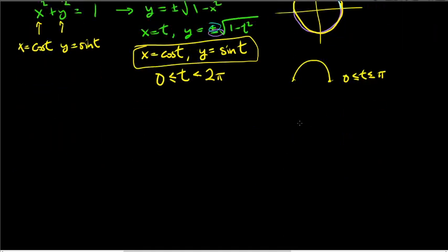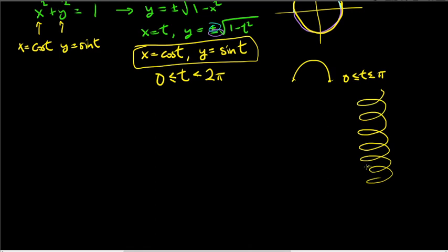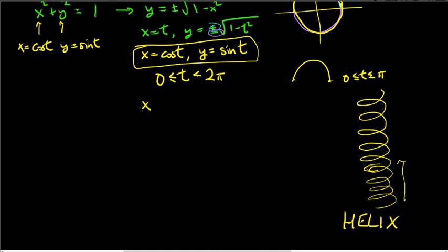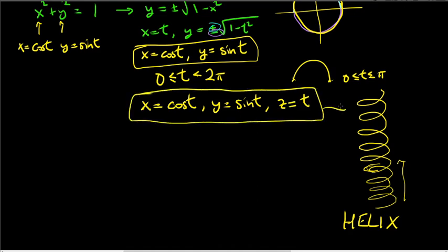This is nothing new, but what might be new is something like a spiral — mathematically called a helix. A helix is a curve in space, not a plane curve. Think of a circle where a point moves upward, with a vertical z-component. We can represent it parametrically similarly to a circle: x = cos t, y = sin t, z = t.